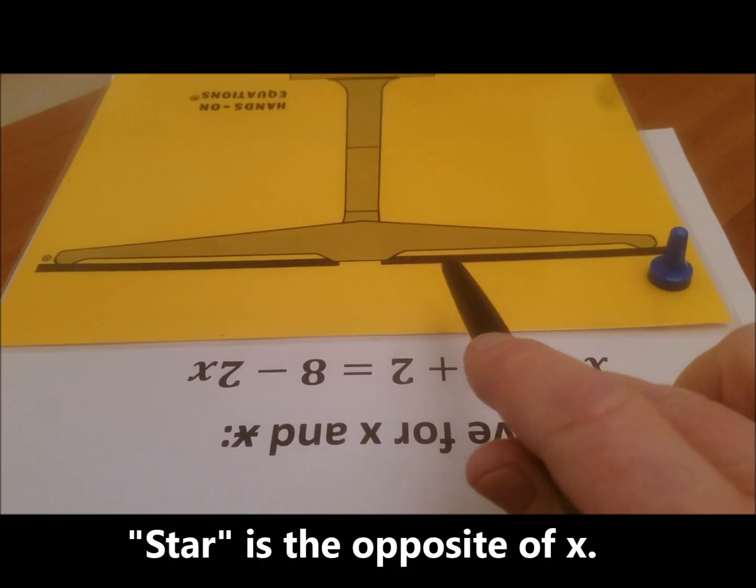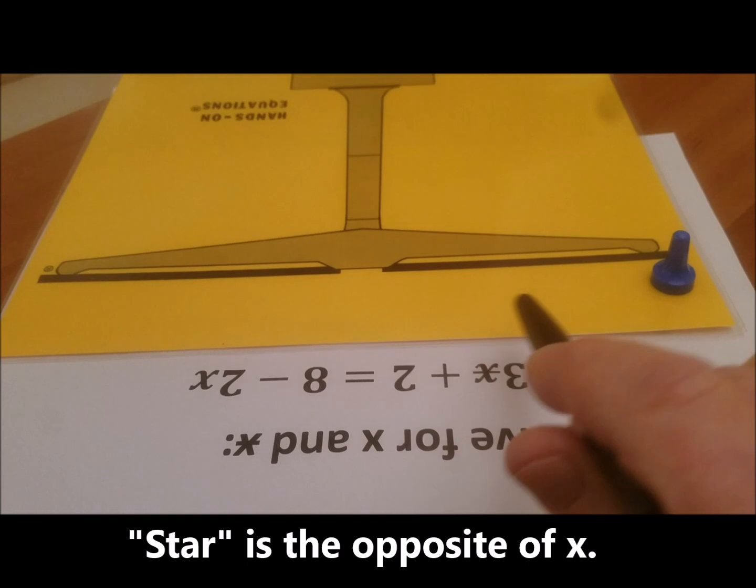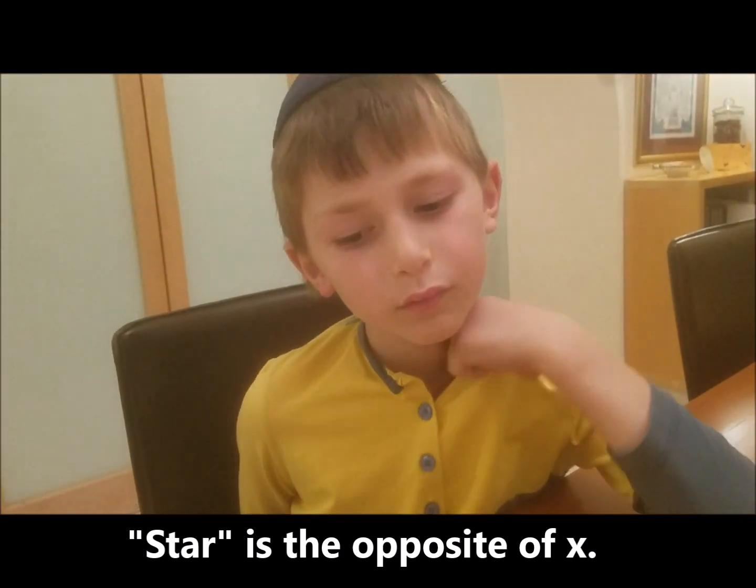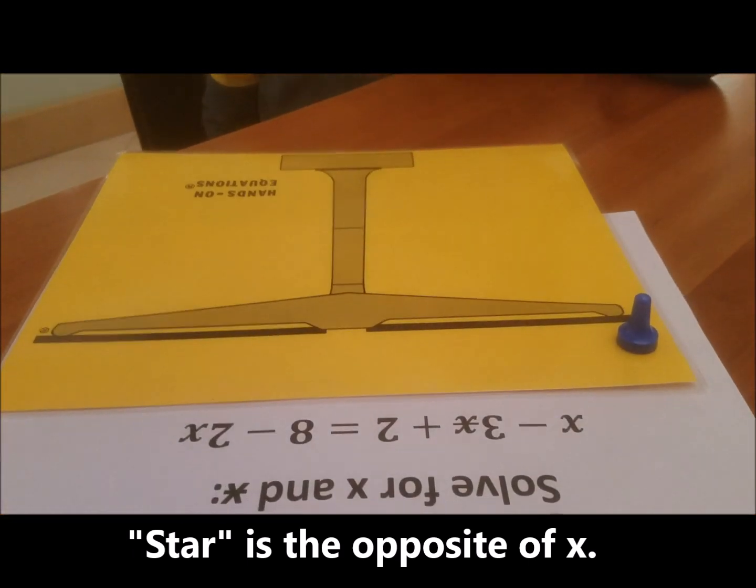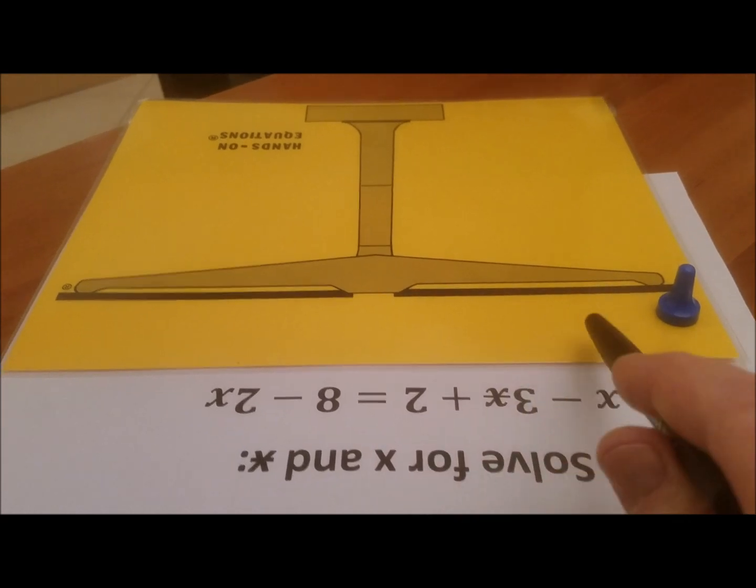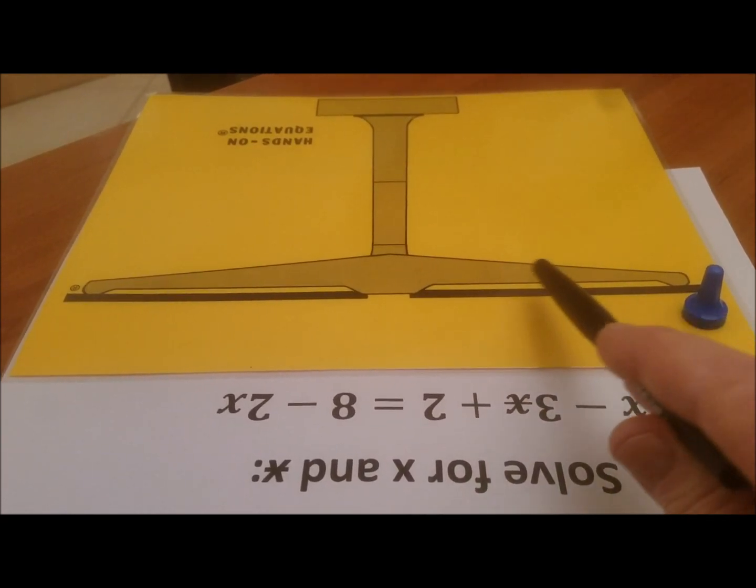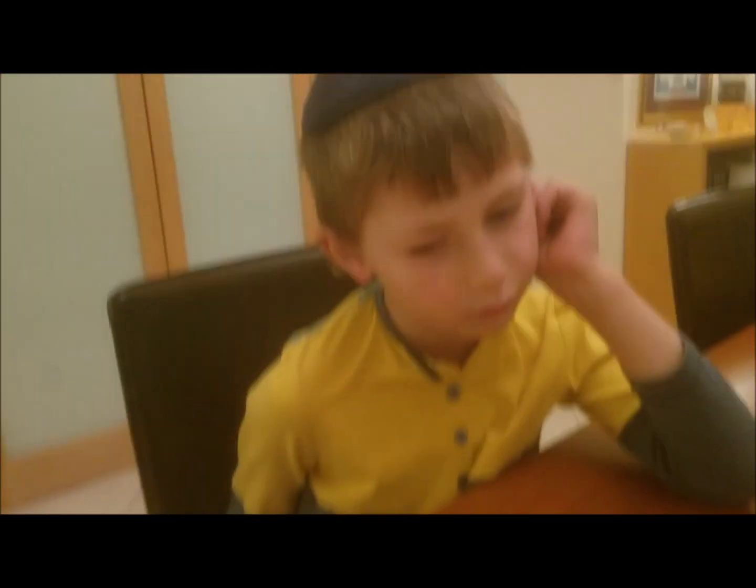We don't have any white pawns to take away, so we're going to have to use a new strategy. Before I show you the strategy, do you have any ideas how we could take away three white pawns when we don't have them?